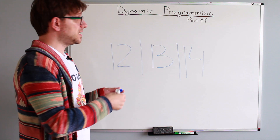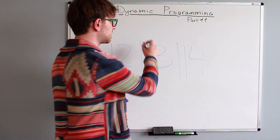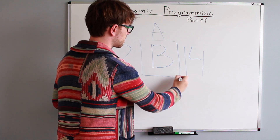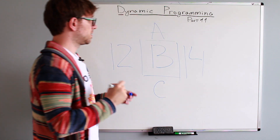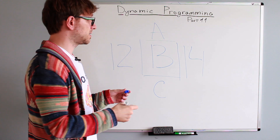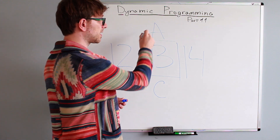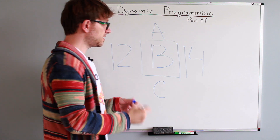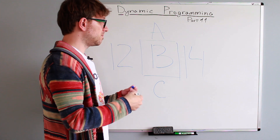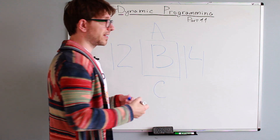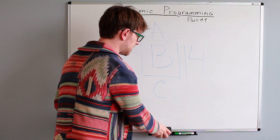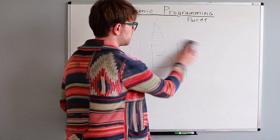If I were to add even more context, again you're using top-down processing. You're looking at A, you're looking at C, and as a result you can tell me that this is a letter B. So this is the difference between top-down and bottom-up processing.